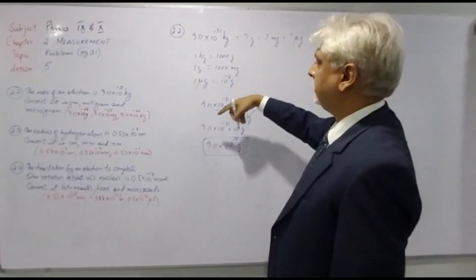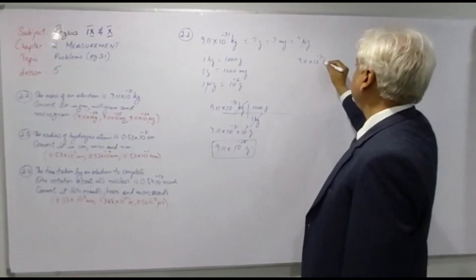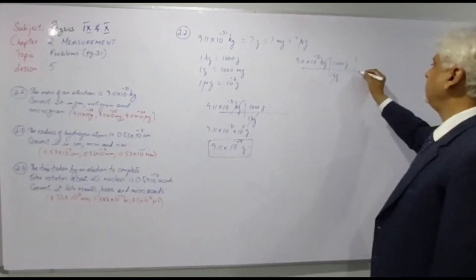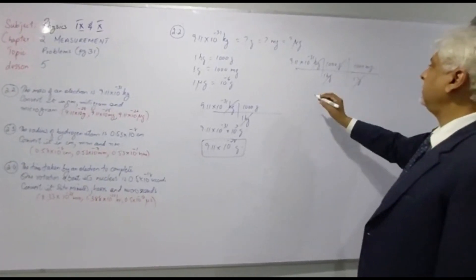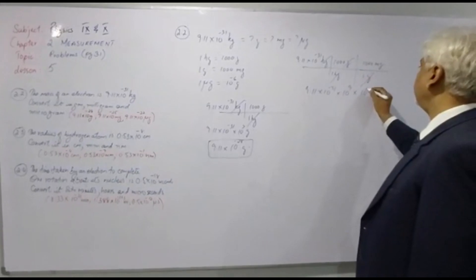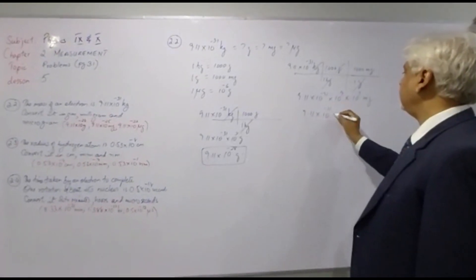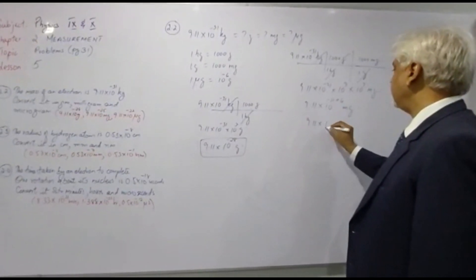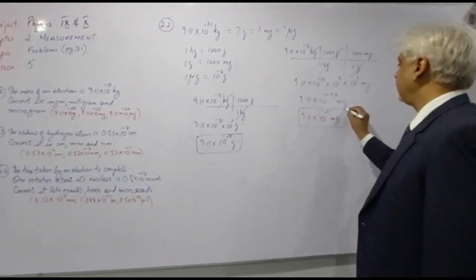In the same way, converting into milligrams: 9.11 times 10 to the power minus 31 kilogram. We know that 1 kilogram is equal to 1000 grams — kilogram and kilogram cancel out. 1 gram is equal to 1000 milligrams — gram and gram cancel out. So we have 9.11 times 10 to the power minus 31, times 10 to the power 3, times 10 to the power 3 milligrams. 3 plus 3 gives 6, so the answer is 9.11 times 10 to the power minus 25 milligrams.